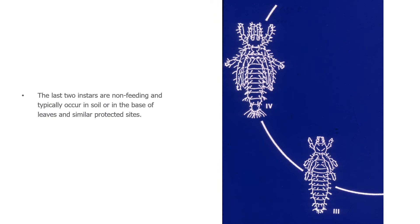The last two instars aren't feeding on the plant. Rather, they've made their way down to the base of the plant or in debris right around the nearby area. They're not feeding, however they are completing their life cycle, and once they become adults they'll repeat the damage to the plants. We can have several generations per year, and so thrips are a constant pressure on our gardens.